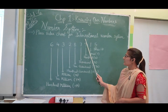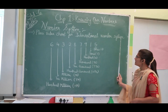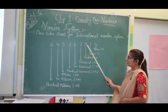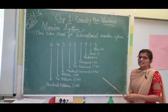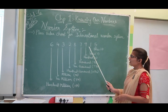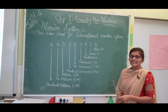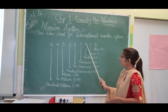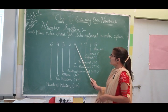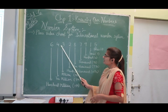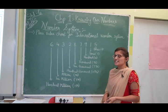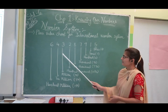Please look at the chart for the International number system. Here you can see a 9-digit number. Let's count to confirm — it is indeed a 9-digit number: 1, 2, 3, 4, 5, 6, 7, 8, 9.